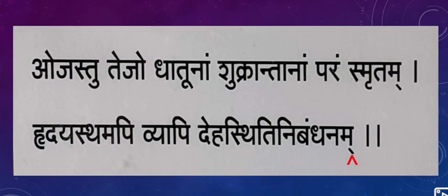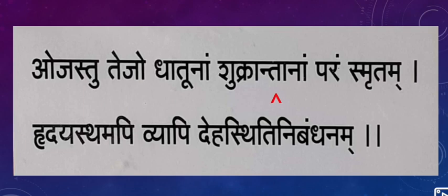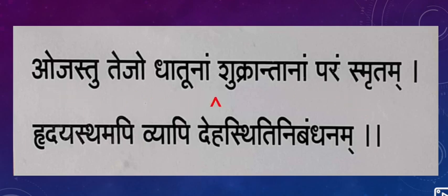The sloka is given again - we discuss the meaning of that sloka: 'Oj astu tejo dhatu naam shukrantanam param smitham, hridisht mapi vyaapi dehasthiti ni bandhanam.' Let's understand what this means.